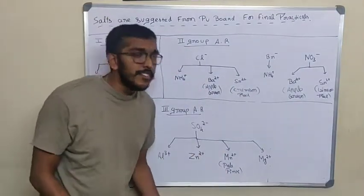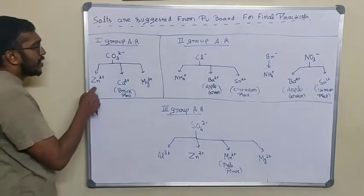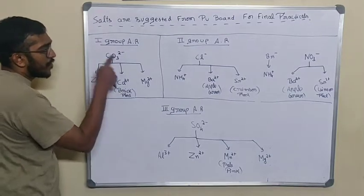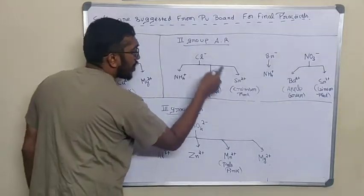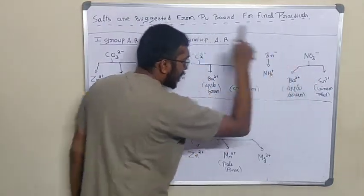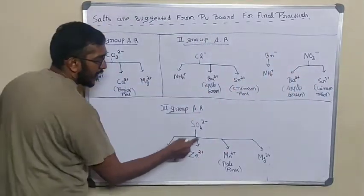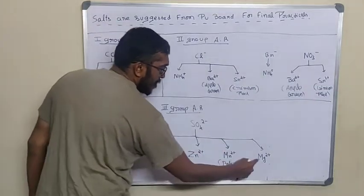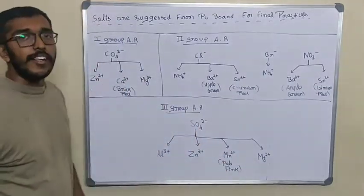According to PU board, there are 13 salts. We have zinc carbonate, calcium carbonate, magnesium carbonate, ammonium chloride, barium chloride, strontium chloride, ammonium bromide, barium nitrate, strontium nitrate, aluminum sulfate, zinc sulfate, manganese sulfate, and magnesium sulfate.